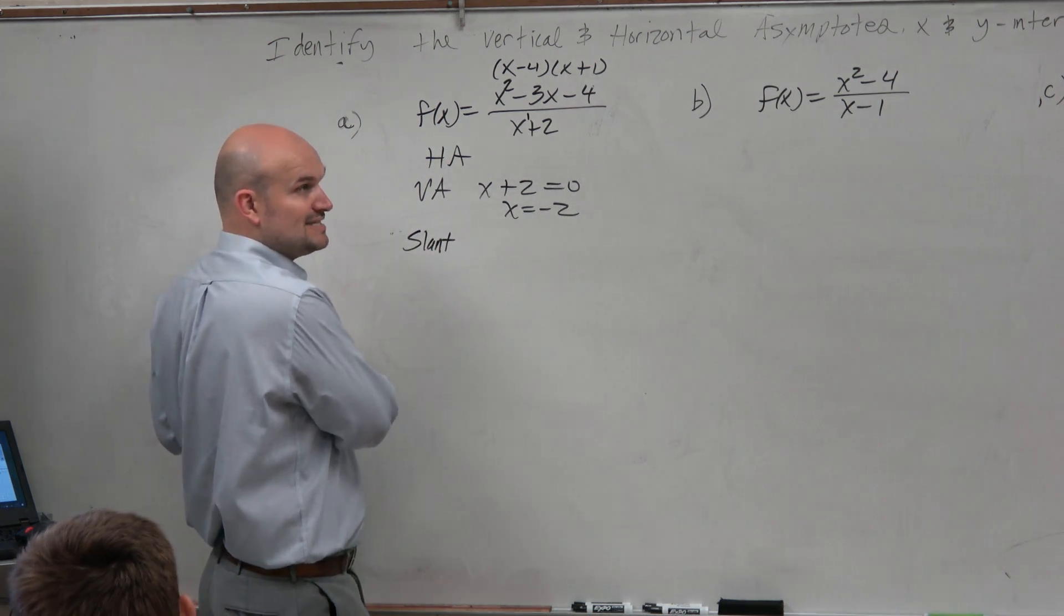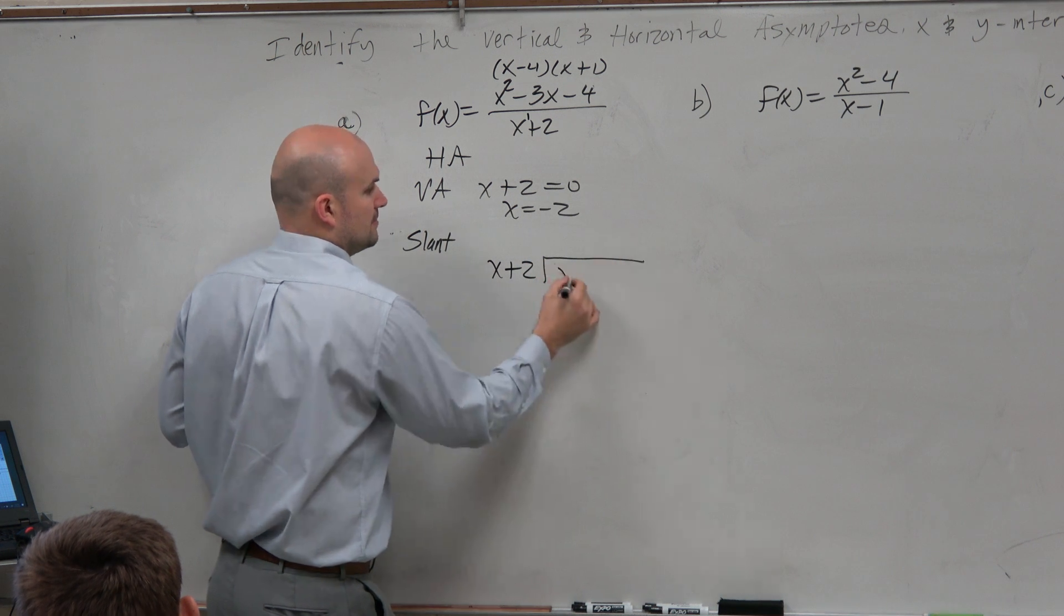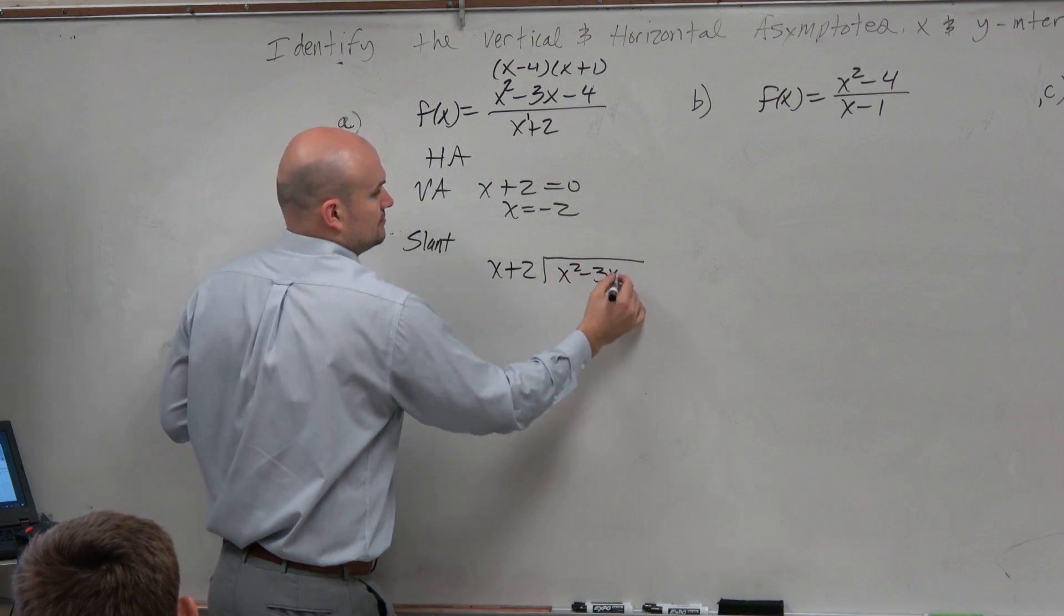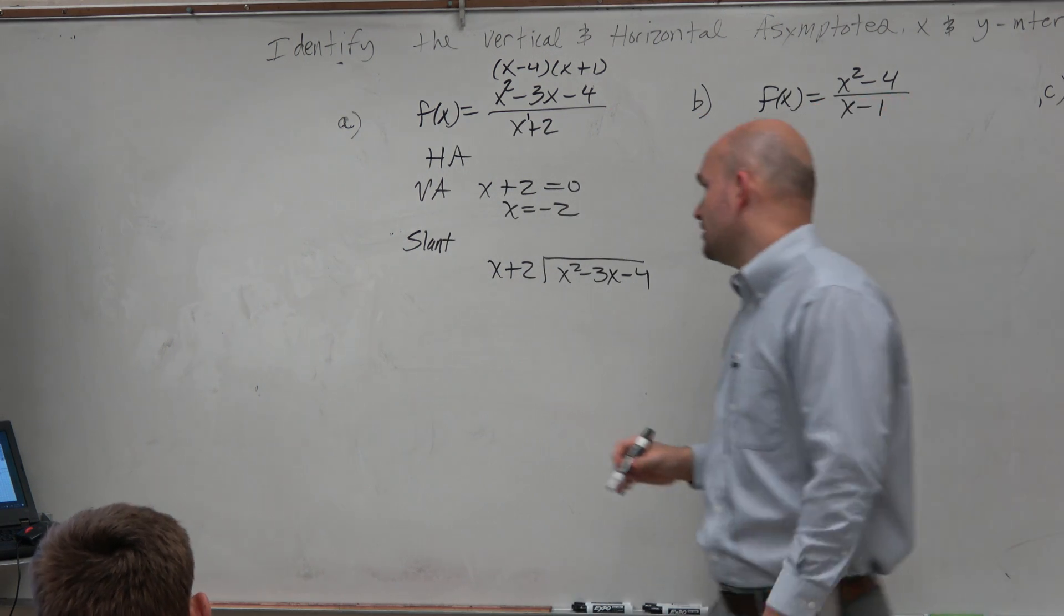So to find your oblique asymptote, you guys are going to go back to doing division again. OK, so we're going to go back to using long division.